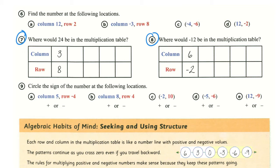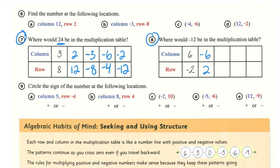Here I want us to look at numbers seven and eight. The first one is asking where would 24 be in the multiplication table. Remember in the table we're multiplying our column number by our row number, so three times eight is 24. Another option would be two times 12, but we also want to think of our negatives — negative three times negative eight would also be positive 24, or negative six times negative four, or negative two times negative 12. In number eight, where would negative 12 be? Six times negative two would be negative 12. We could also flip that and do negative six times positive two. Also three times negative four, or negative three times positive four, or one times negative 12.